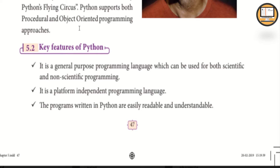Object-oriented programming can be used in real time. Languages like C++ use this approach. Python supports both the procedural and object-oriented programming approaches.